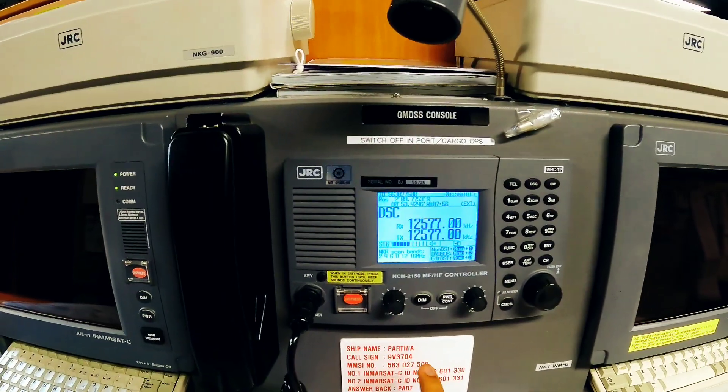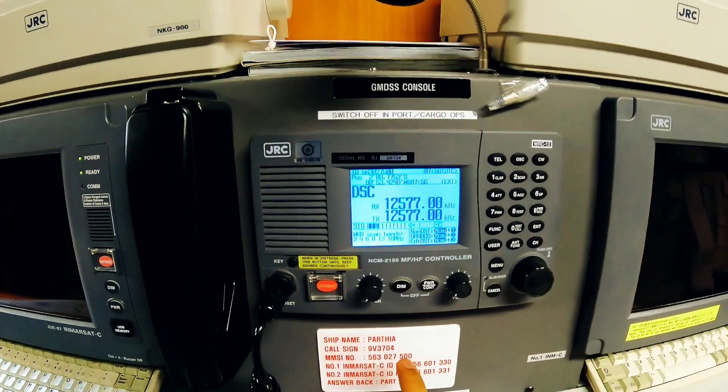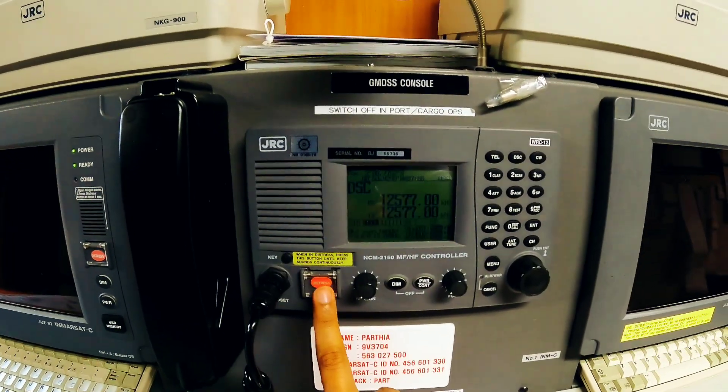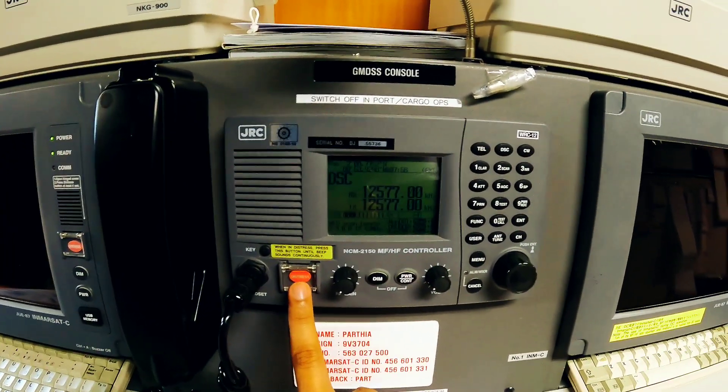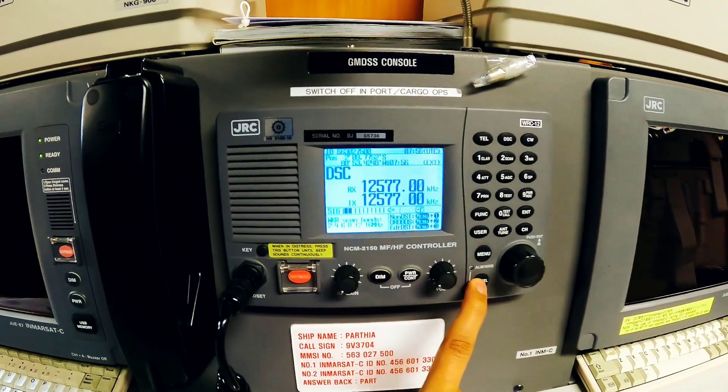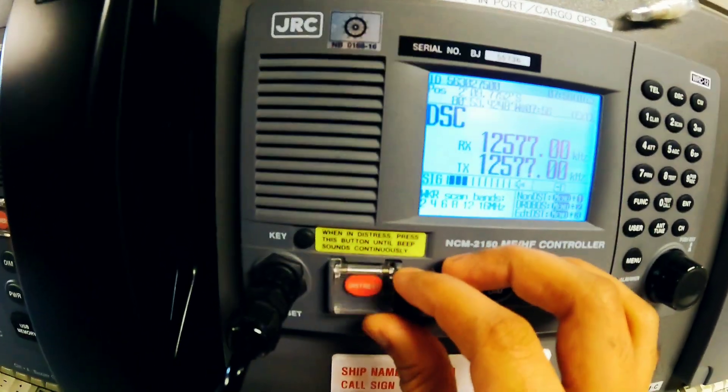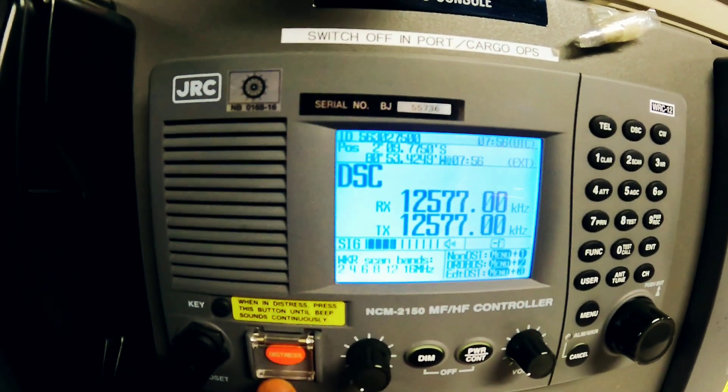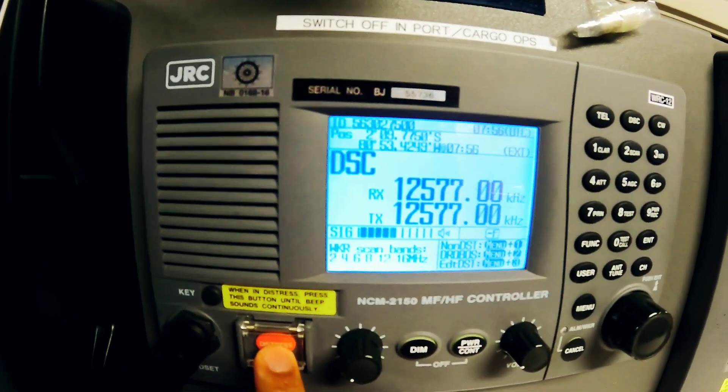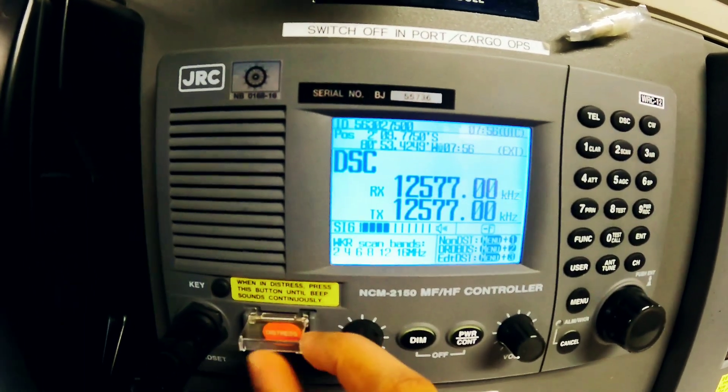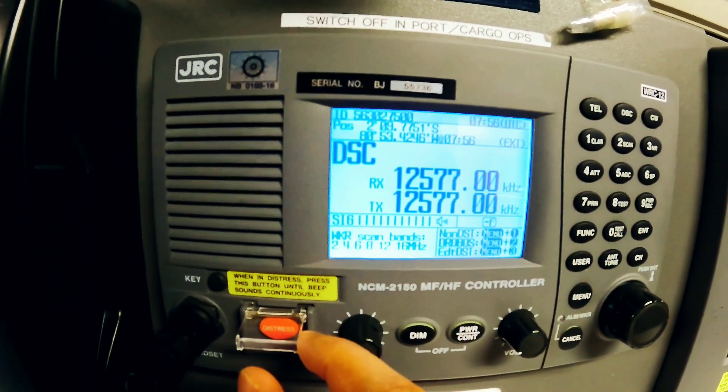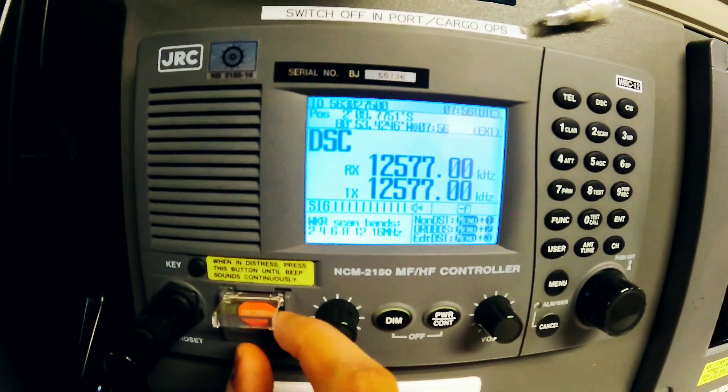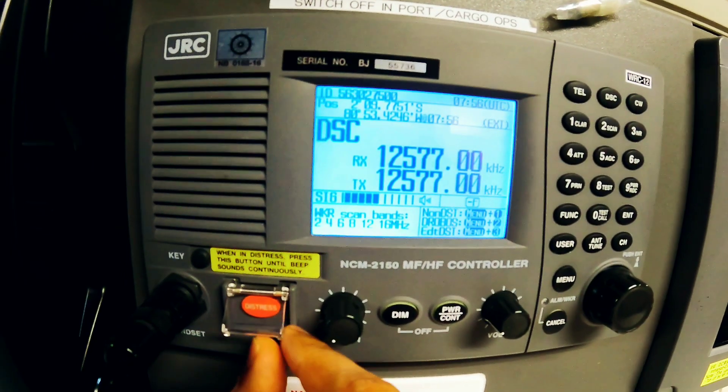One is undesignated and another is designated. For sending an undesignated message, you can see here there is a distress button which is covered by a hinge cover. You have to remove this hinge cover and press the distress button for at least four seconds. The four seconds is basically a countdown so that if you want to cancel it, you can just release it before four seconds to prevent it from transmitting.